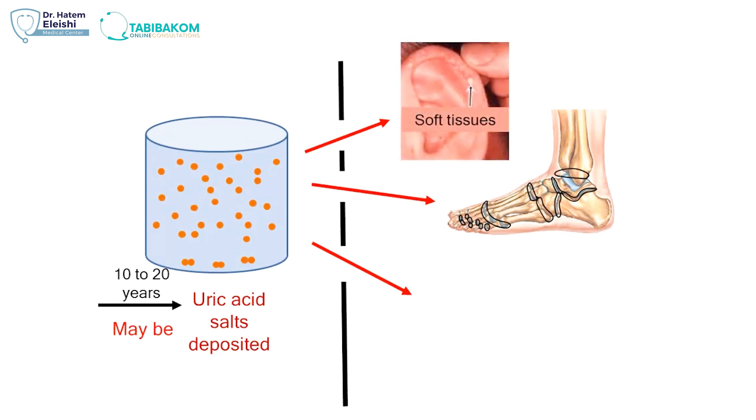Or in the soft tissues, like here, this is one of the common tissues that they like. Or in the urinary tract, in the kidney, ureter, urethra. They love those three places to deposit.